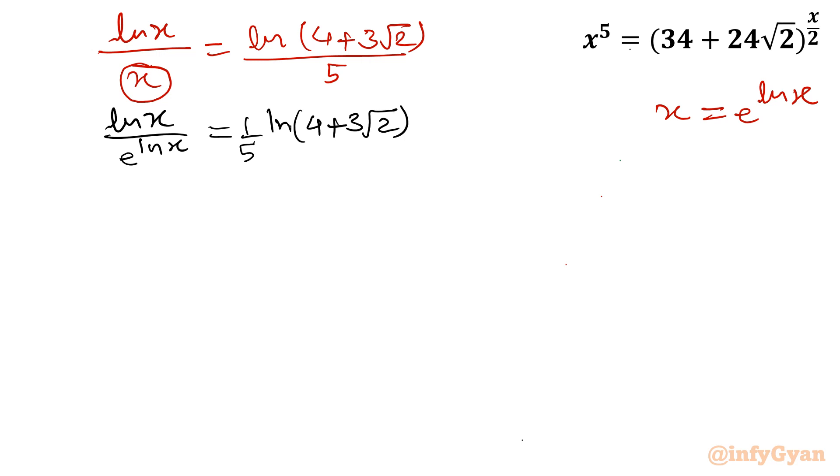So here I am going to write in the denominator e raised to the power ln x. So it will become ln x times e raised to the power minus ln x equal to 1 over 5 ln 4 plus 3 root 2.